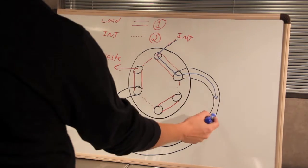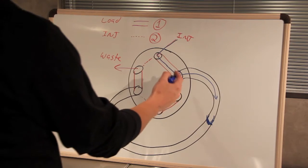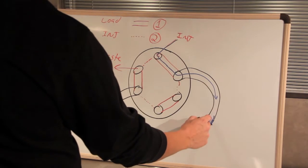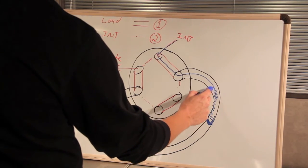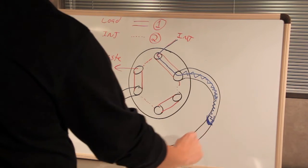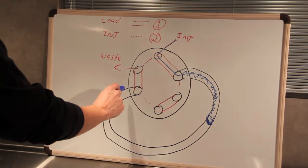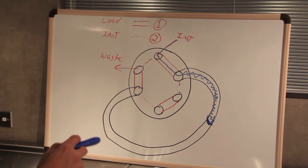So we filled up the loop. Now when we go to inject we don't want to push the sample plug which is occupying this space right here all the way through this remainder of the sample loop and onto the column. We want to do what's called back flushing the sample loop.